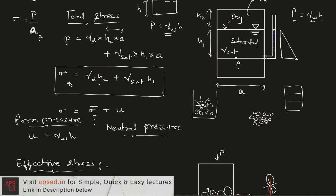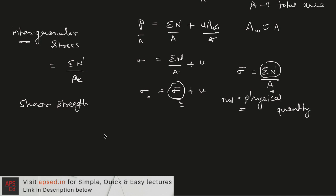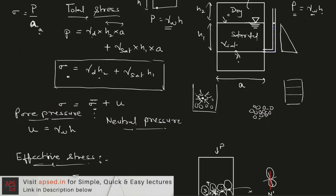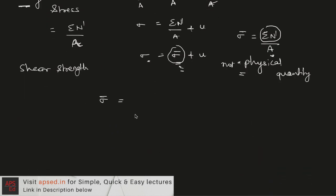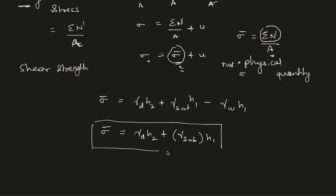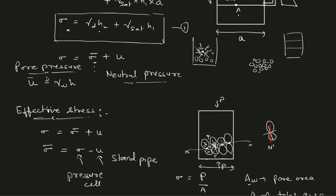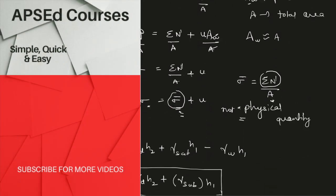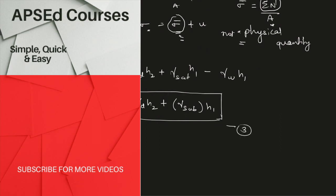Similarly to how we calculated total stress, we can find effective stress at point A. Total stress is gamma_d·H2 plus gamma_saturated·H1, and pore pressure is gamma_w·H1. So effective stress equals gamma_d·H2 plus (gamma_saturated minus gamma_w)·H1, which equals gamma_d·H2 plus gamma_submerged·H1. To summarize: total stress equals gamma_d·h2 plus gamma_sat·h1; pore pressure u equals gamma_w·h; and effective stress equals gamma_d·H2 plus gamma_sub·H1.